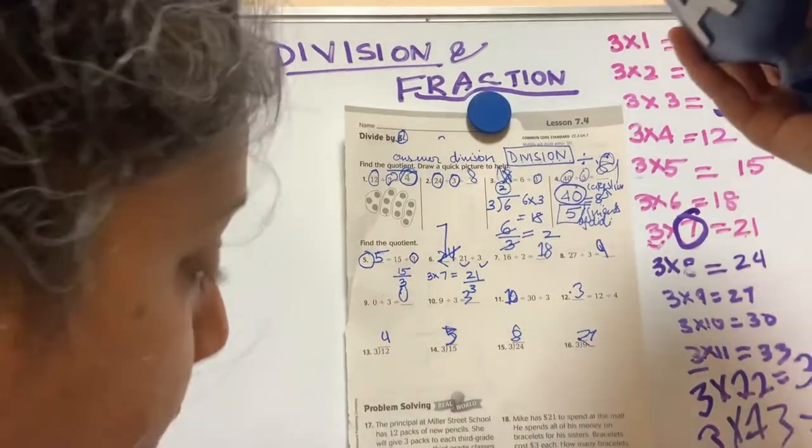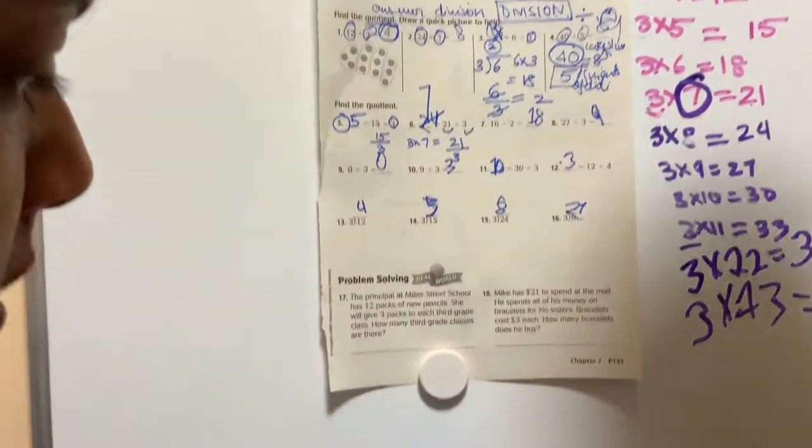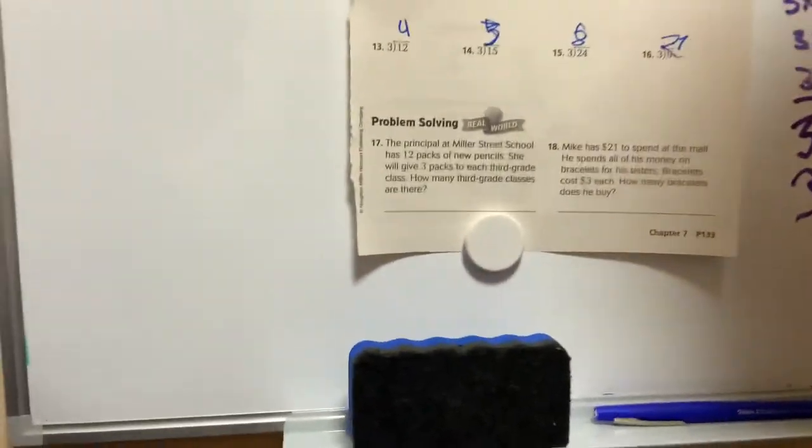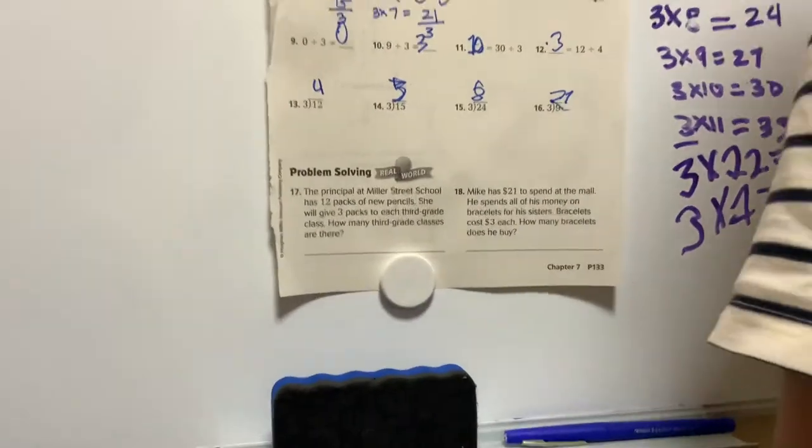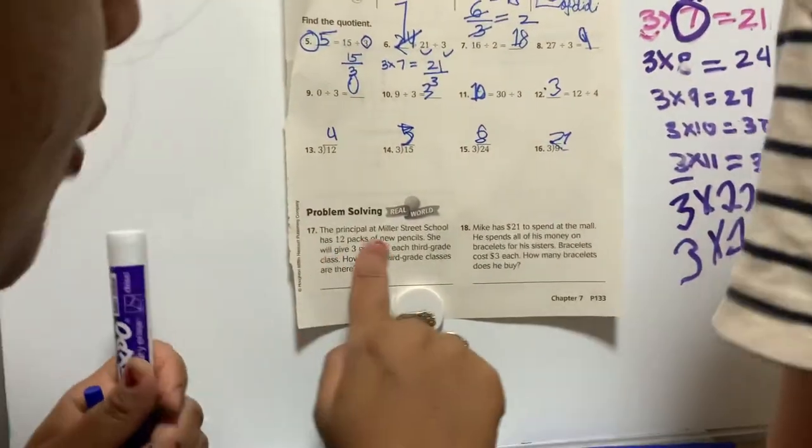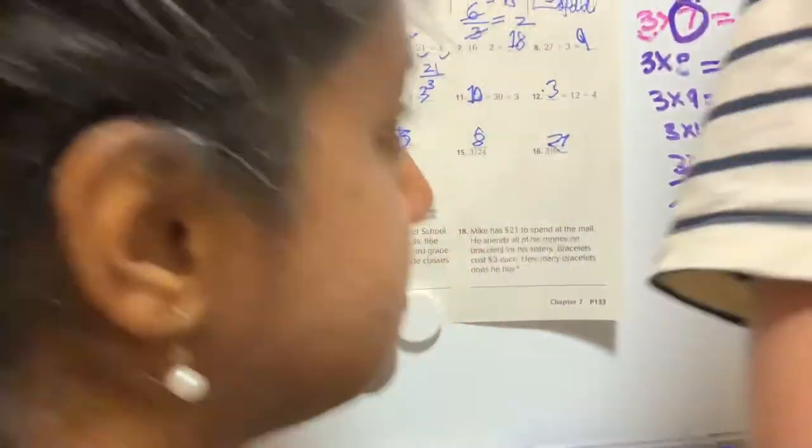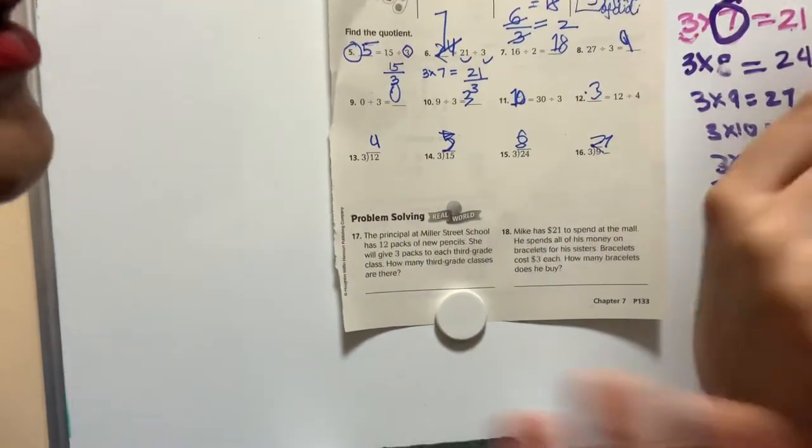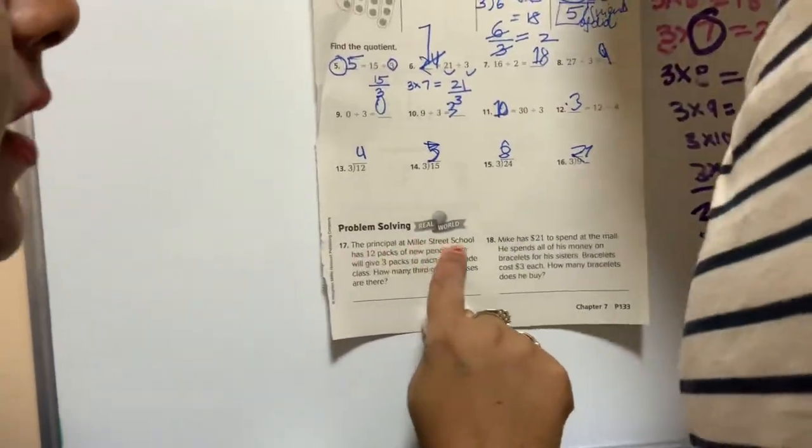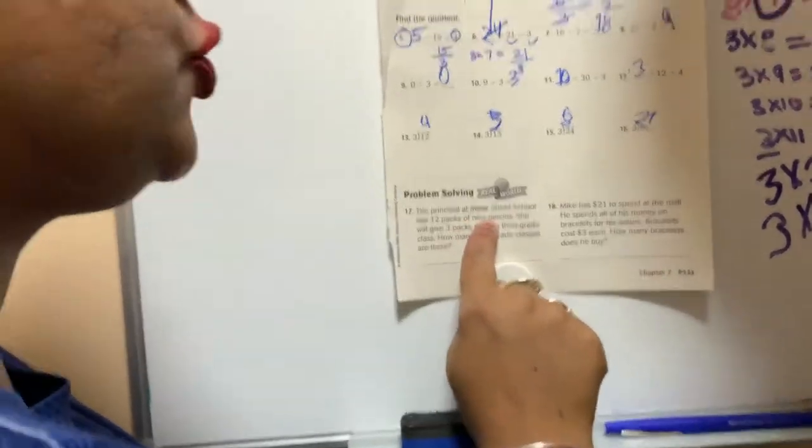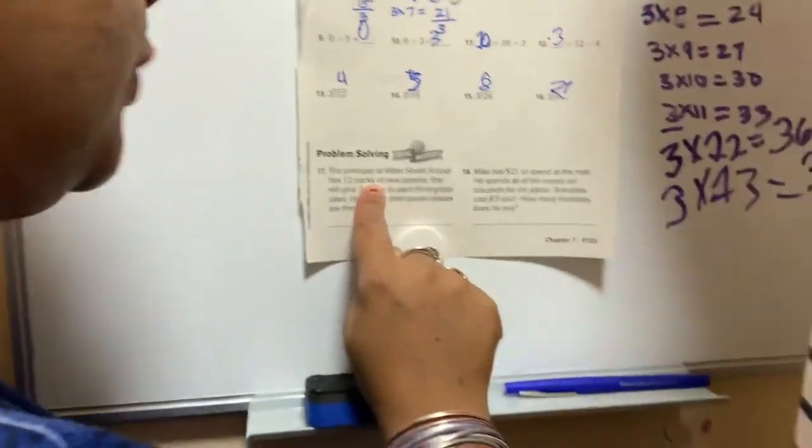Now, the principal at Miller Street School has 12 packs of new pencils. How many packs of new pencils does the principal have? Okay, here the principal at Miller Street School has 12 packs of pencils, 12.